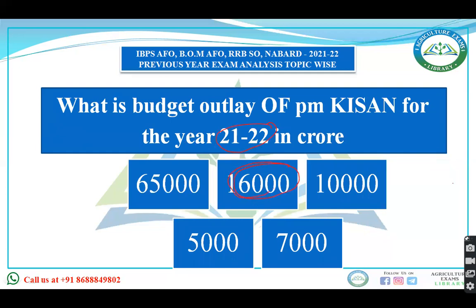Regarding the Pradhan Mantri Kisan scheme, the cumulative outlay is 2,00,050 crore rupees up to the year 2024-25.